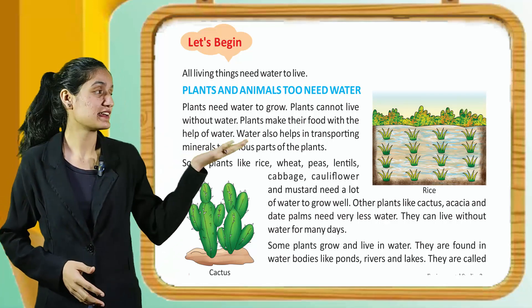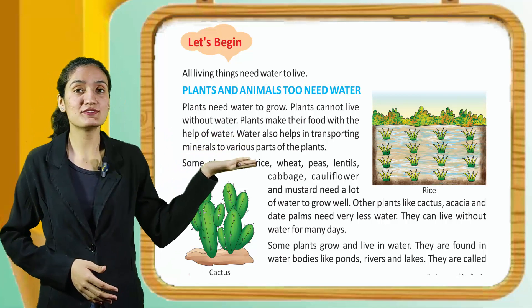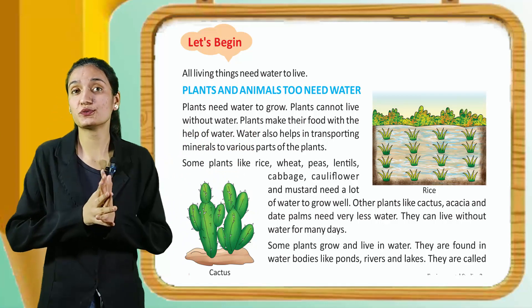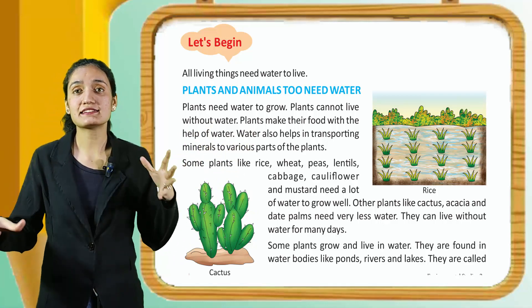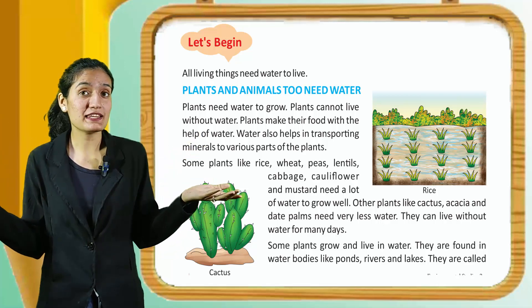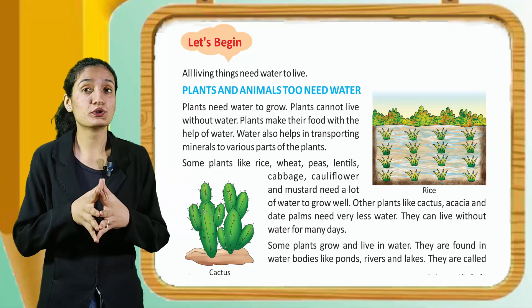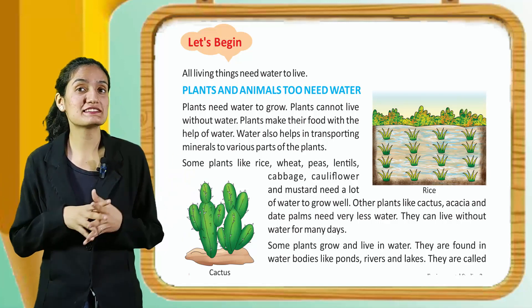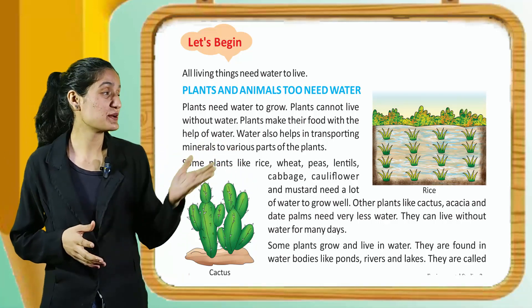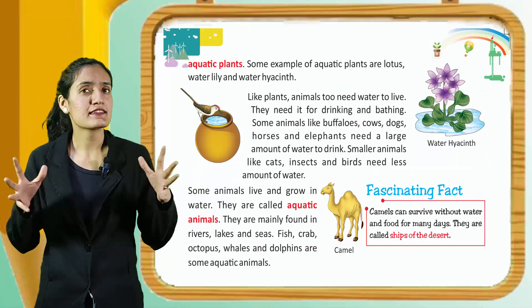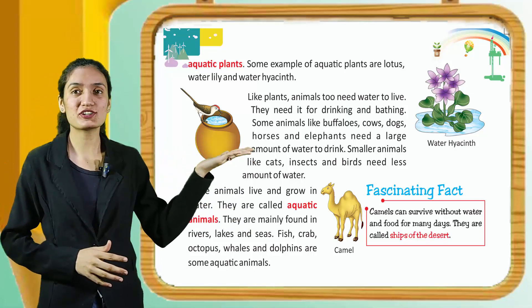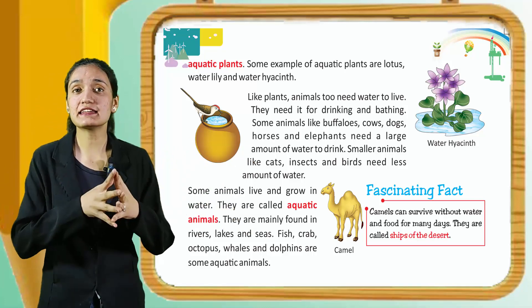Some plants like rice, wheat, peas, lentils, cabbage, cauliflower, and mustard need a lot of water to grow well. Other plants like cactus, acacia, and date palms need very less water — they can live without water for many days. Some plants grow and live in water; they are found in water bodies like ponds, rivers, and lakes. They are called aquatic plants. Examples include lotus, water lily, and water hyacinth.